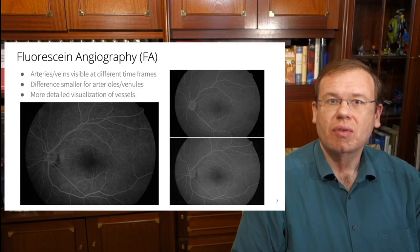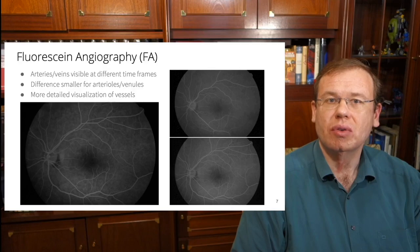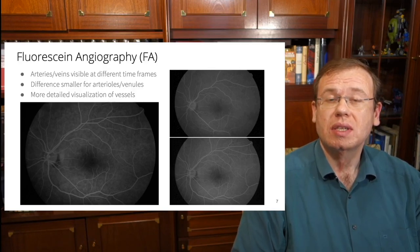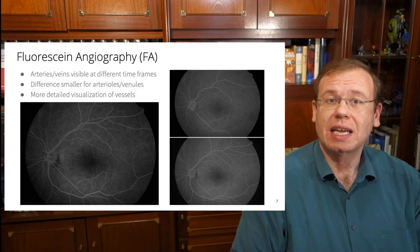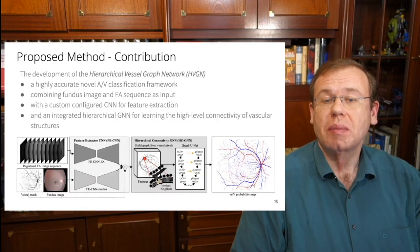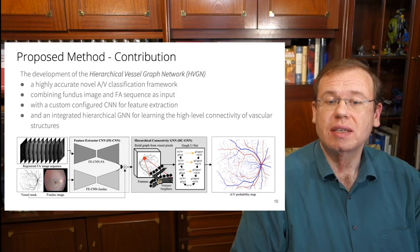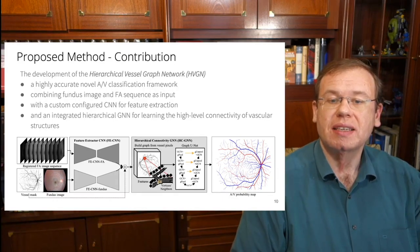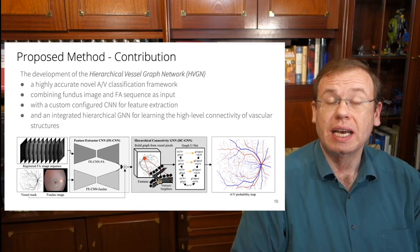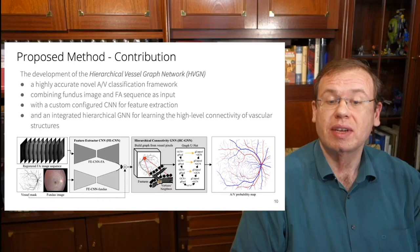And the nice thing in fluorescence angiography is that you can actually use contrast agent in order to visualize the flow. So this means that you can actually see by several sequences of images at what time what part of the vessel tree is actually being contrasted. And this allows you to differentiate arteries and veins.